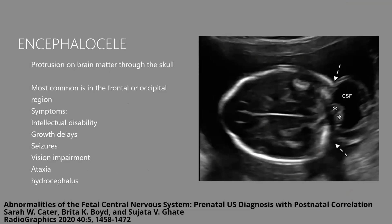Encephalocele is a protrusion of brain matter through the skull, most commonly occurring in the frontal or occipital region. The larger the herniation, the worse the prognosis. Frontal herniations typically contain less brain matter and have a better prognosis, while occipital herniations often carry a far worse prognosis. Symptoms can include intellectual disability, growth delays, seizures, vision impairment, ataxia, and hydrocephalus, among others.